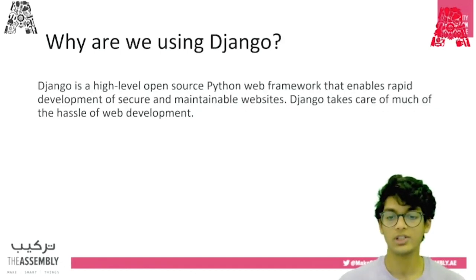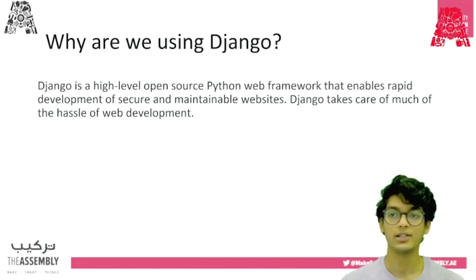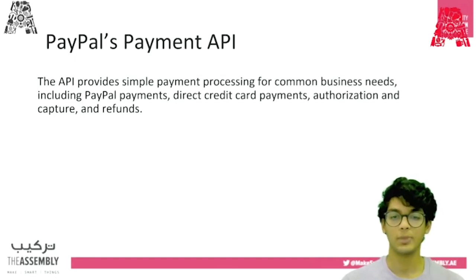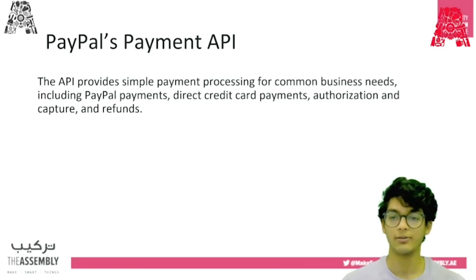So why are we using Django? Django is a high-level open-source Python web framework that enables rapid deployment of secure and maintainable websites. Django takes care of much of the hassle of web development. Now let's take a look at PayPal's payment API. The API provides simple payment processing for common business needs including PayPal payments, direct credit card and debit card payments, and authorization, capture, and refunds.